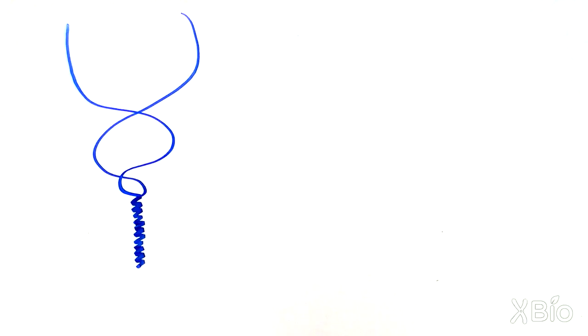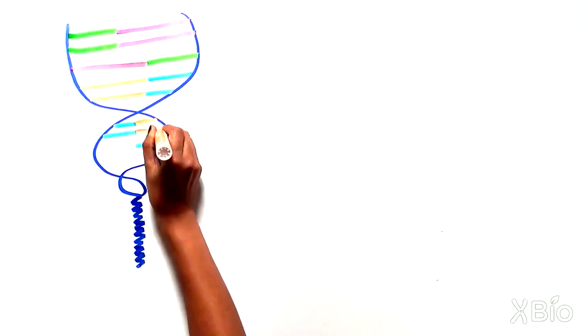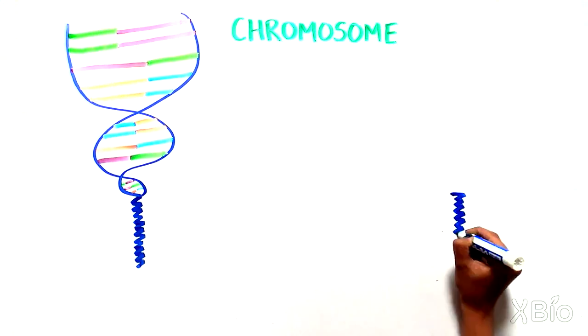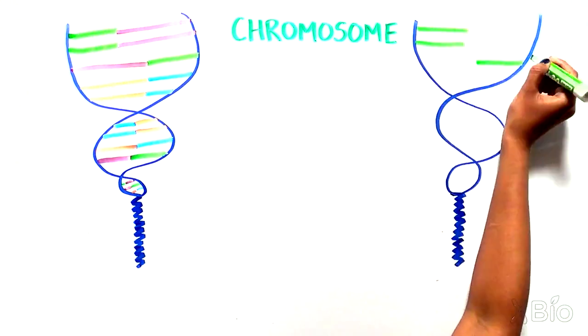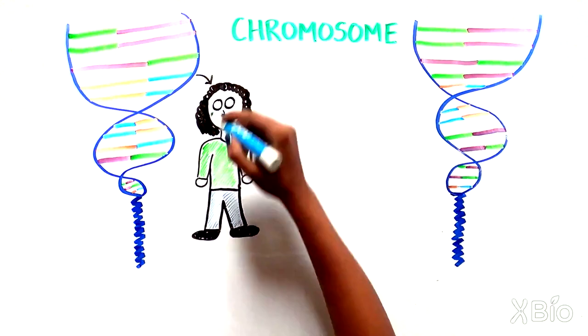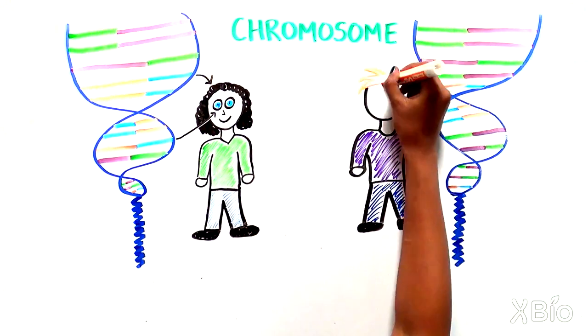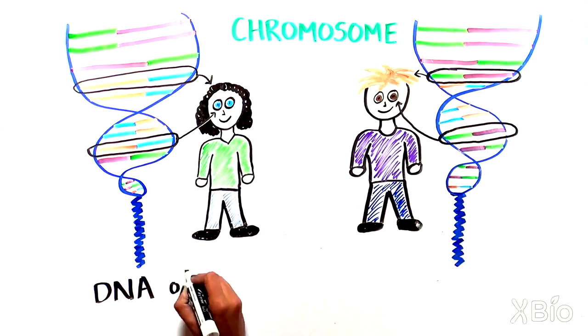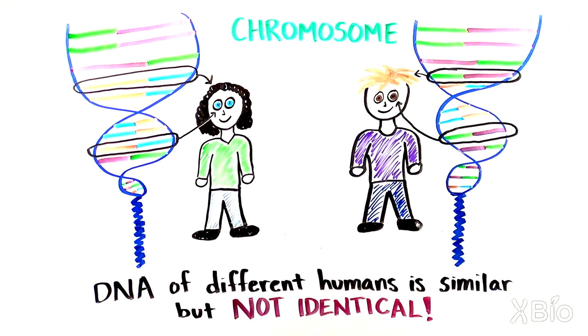The genome of humans is divided into several very long DNA double helices, each of which is called chromosome. The DNA of different humans are incredibly similar but not identical, except for identical twins. And these differences make each of us unique.